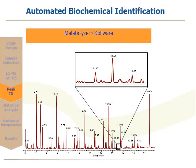What the library allows us to do is, because we've documented that all of those ions are in fact all ion features related to phenylalanine, we can then deconvolute that data and say, we're just going to send one of those ion features into stats to represent phenylalanine. That's reducing the false discovery rate and reducing any potential for skewing of the statistics.